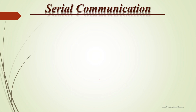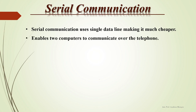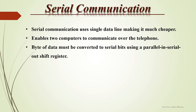In serial communication, data bits are transmitted bit by bit serially on a single line. Serial communication uses a single data line, making it much cheaper compared to parallel communication, where the number of lines equals the number of bits to be transmitted. It enables two computers to communicate over a single telephone line, and a byte of data must be converted to serial bits using a parallel-in serial-out shift register, then transmitted over a single data line.